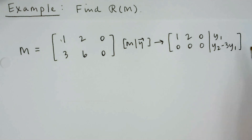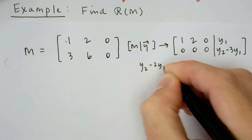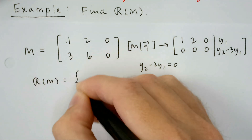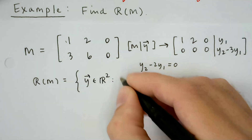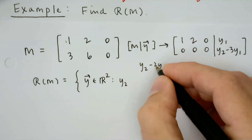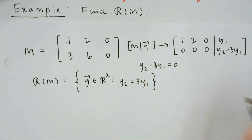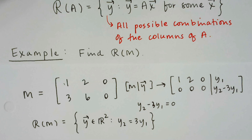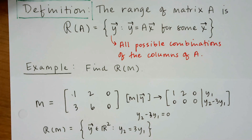So I have a limited range. Had I had both pivots, the range would have been all of R². The condition is y₂ minus three y₁ = 0, so y₂ = 3y₁. The range of M is the set of all Y in R² such that y₂ = 3y₁. Now you need to go forward and compute ranges on some slightly more advanced matrices, but this is exactly the background info you need. That's all for this video — thanks for watching.